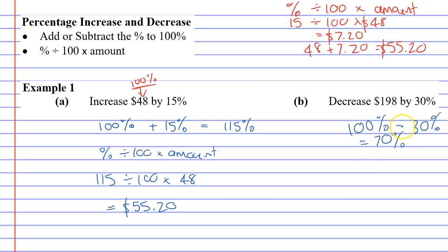So we've decreased our amount by 30%. We're now going to find 70% of what it is. So, using the formula percentage divide 100 times amount. We're going to go 70 divided by 100 times the amount of $198. And what will that give us?